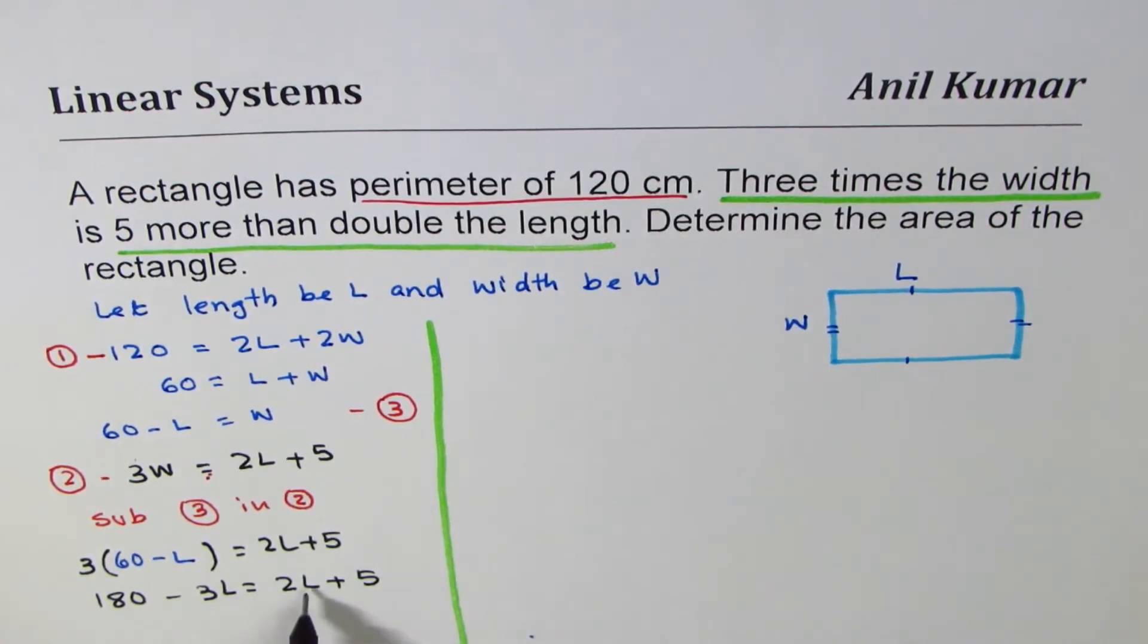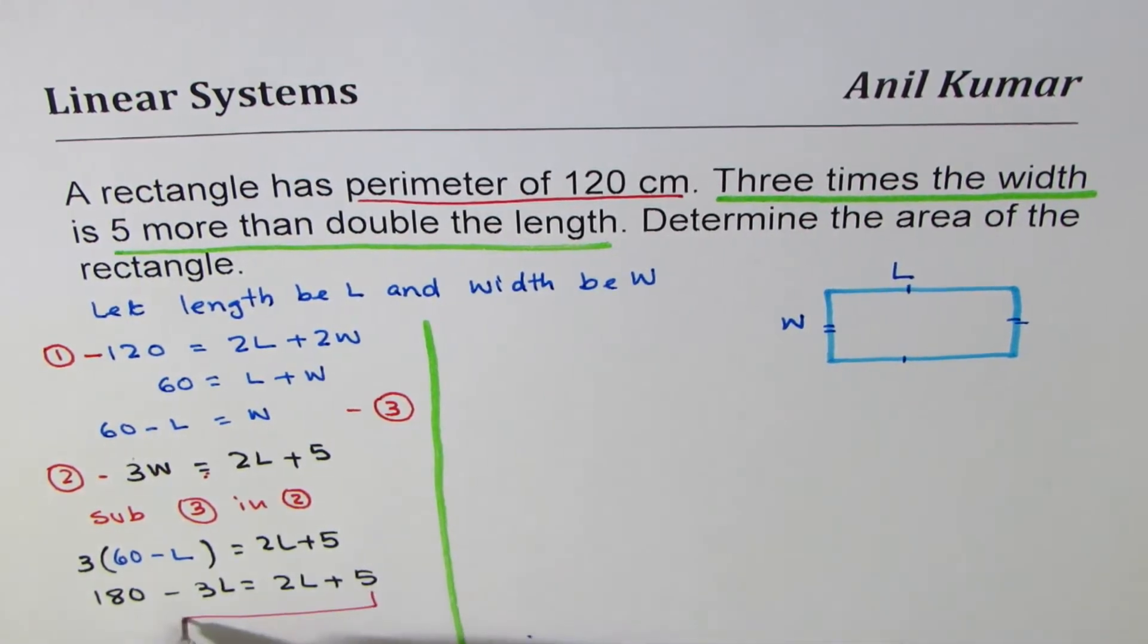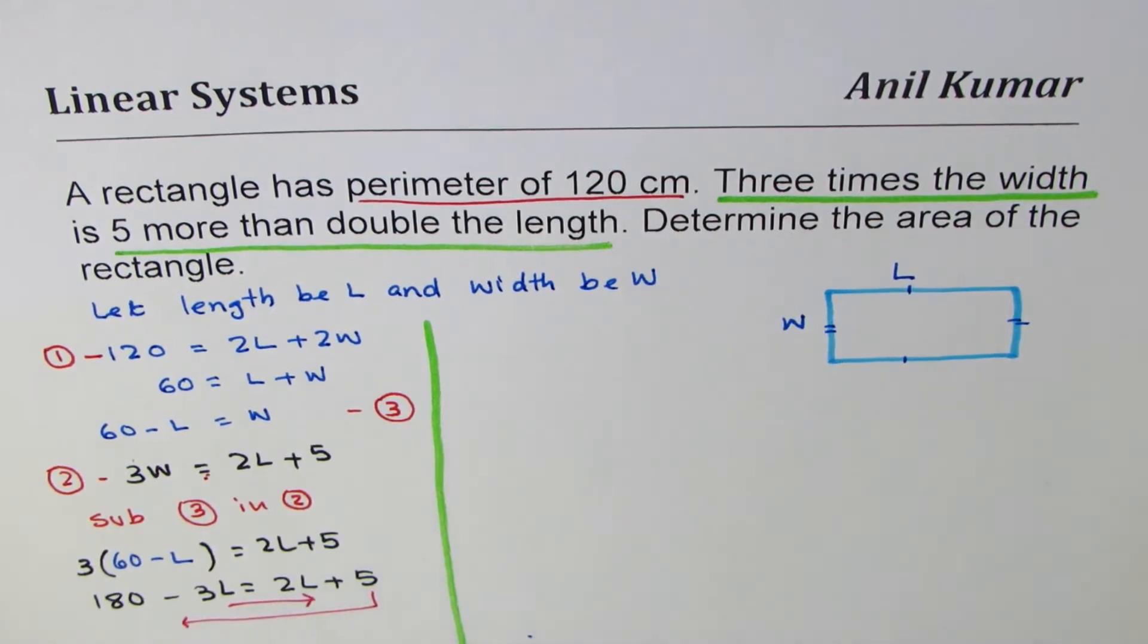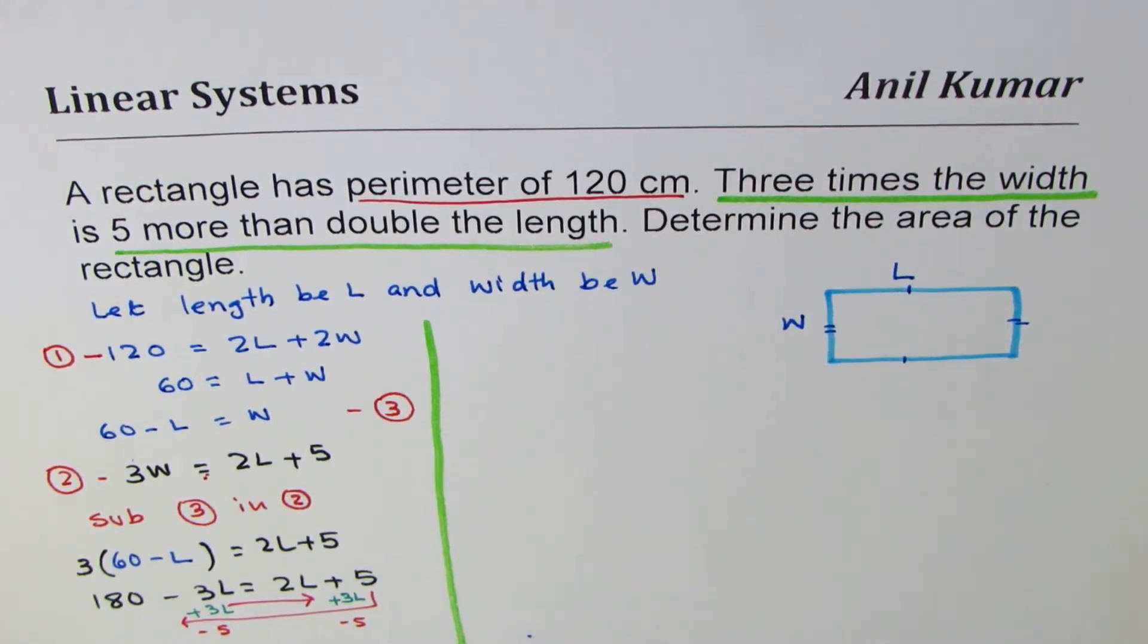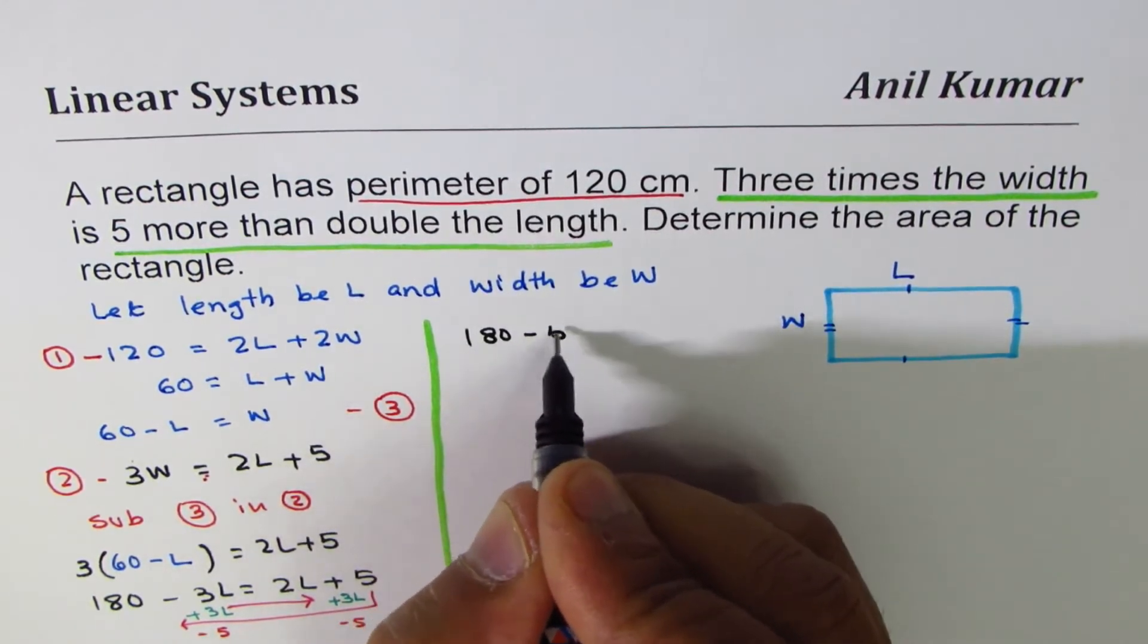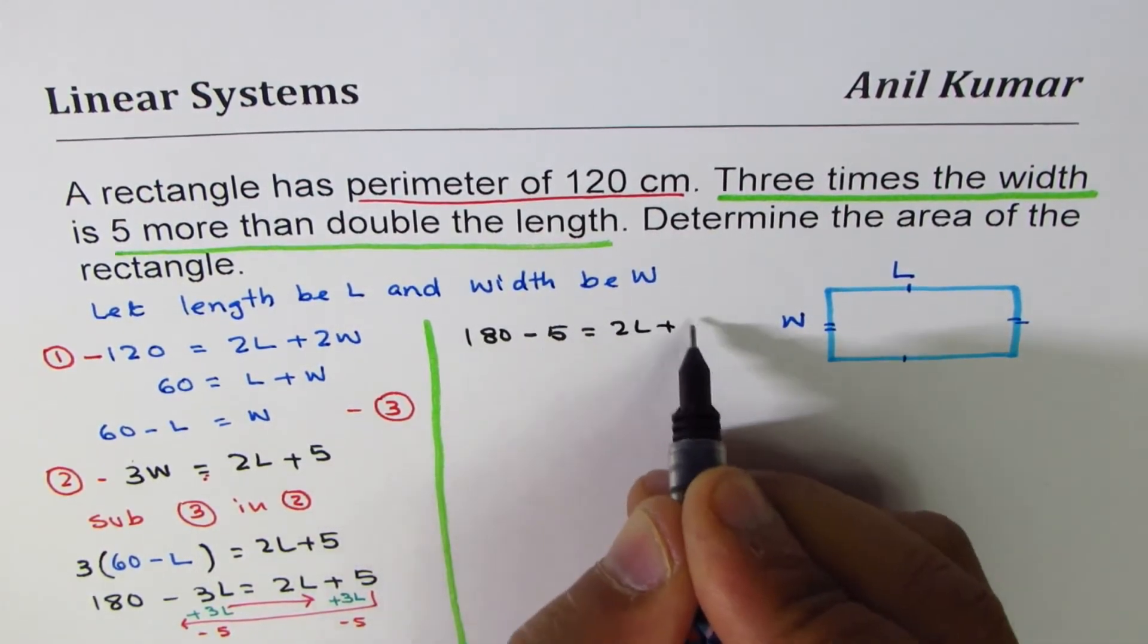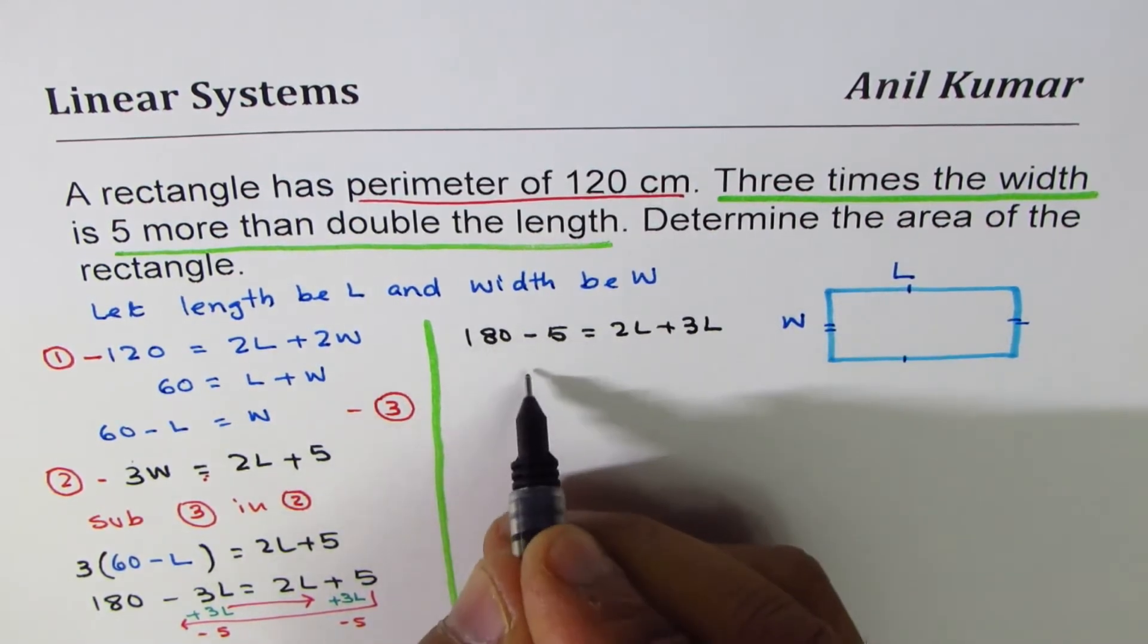Let me rewrite this, putting all the variables on one side and constants on the other side. We'll take 5 to the left side, or you can think of it as adding 3L to both sides and subtracting 5 from both sides. Either way, it results in 180 - 5 = 2L + 3L. 180 - 5 is 175 = 5L.